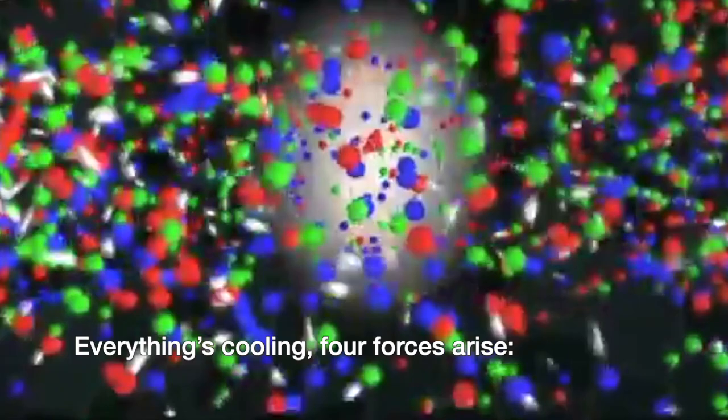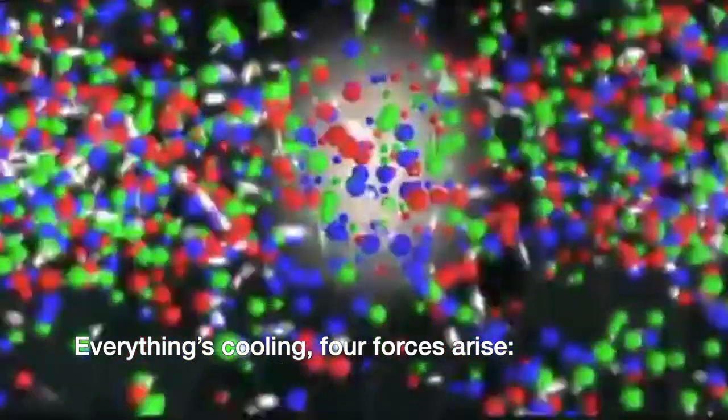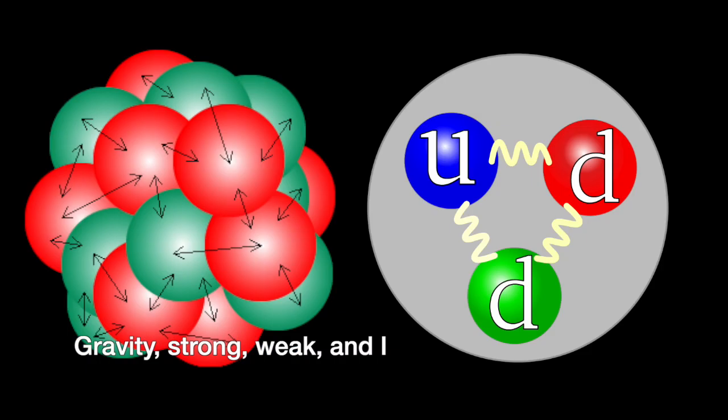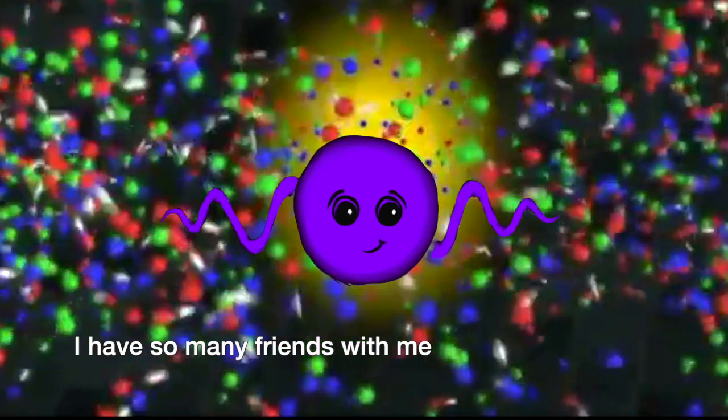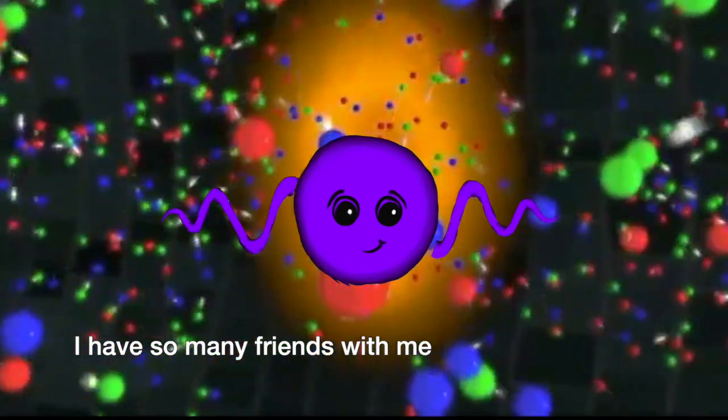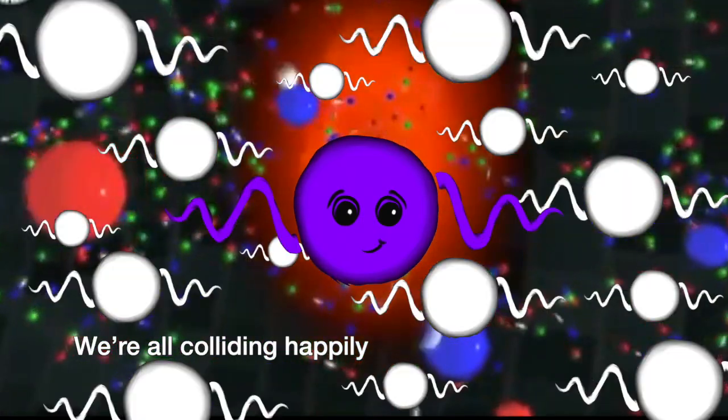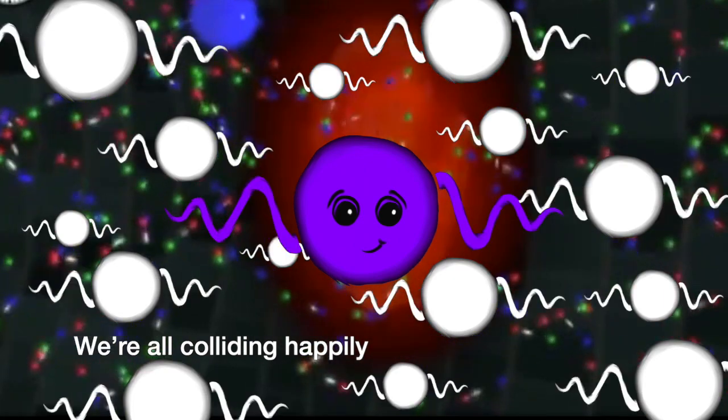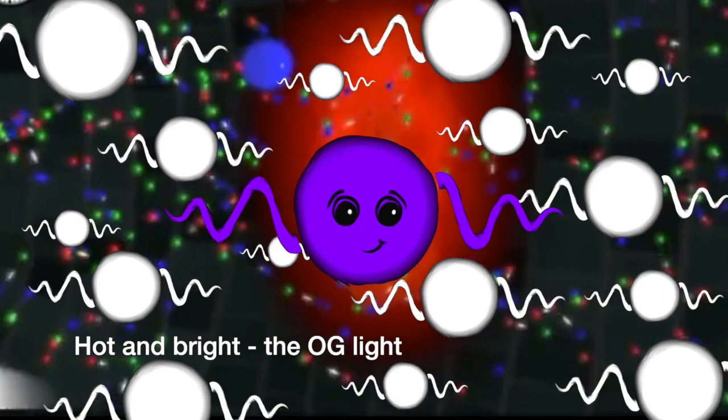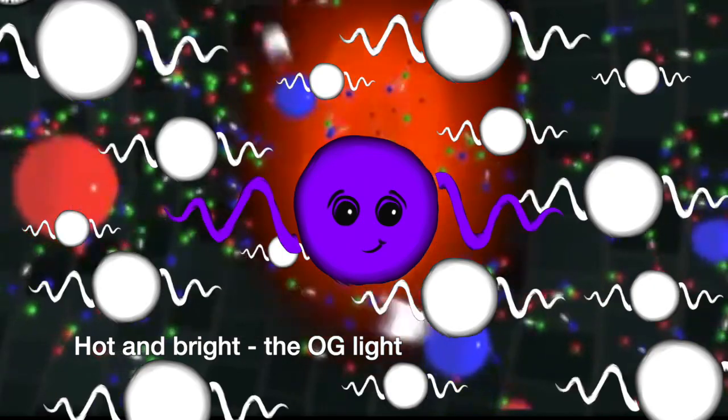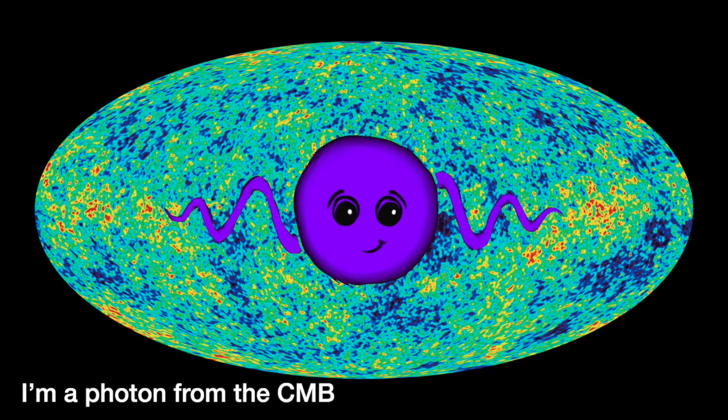Everything's cooling, four forces arise. Gravity's strong, weak, and I have so many friends with me. We're all colliding happily. Let him ride the OG light. I'm a photon from the CMB.